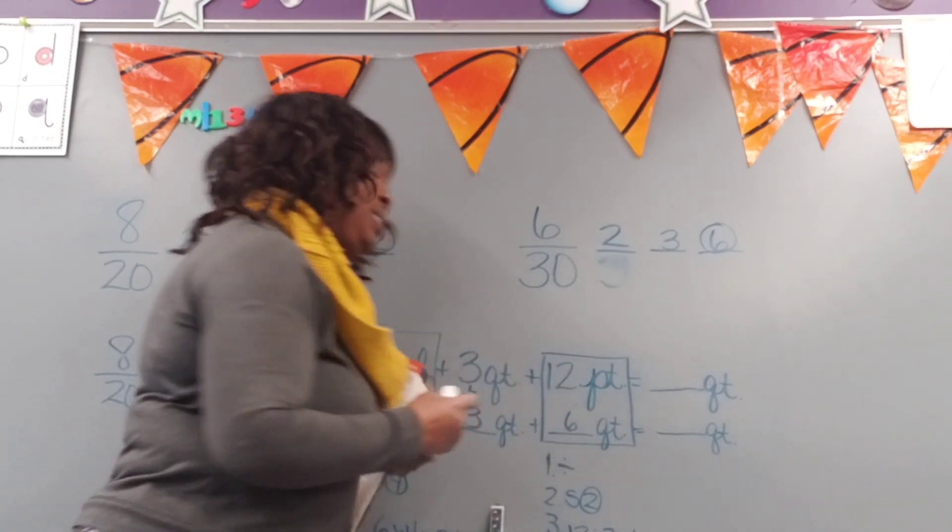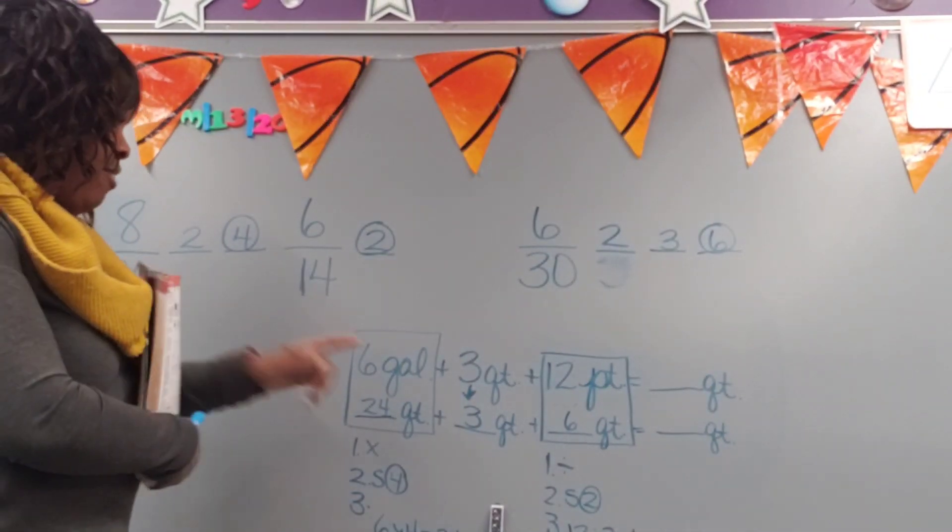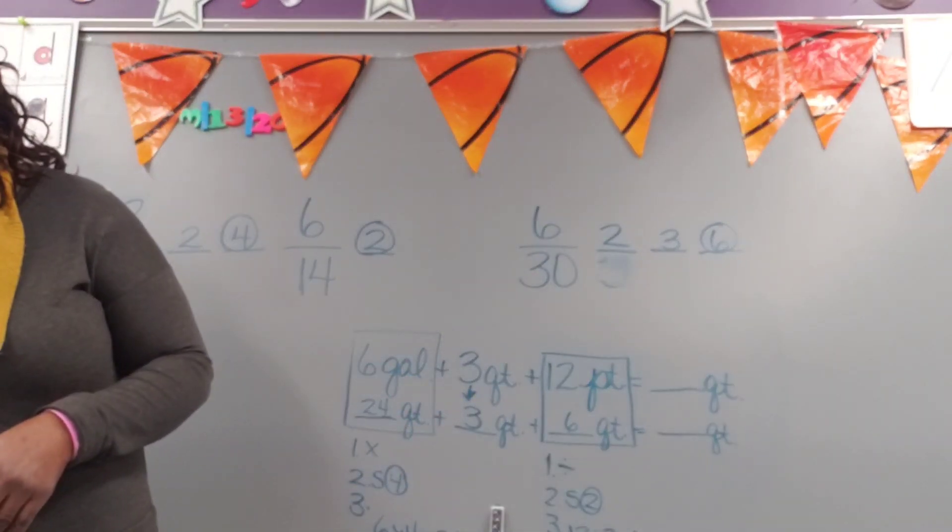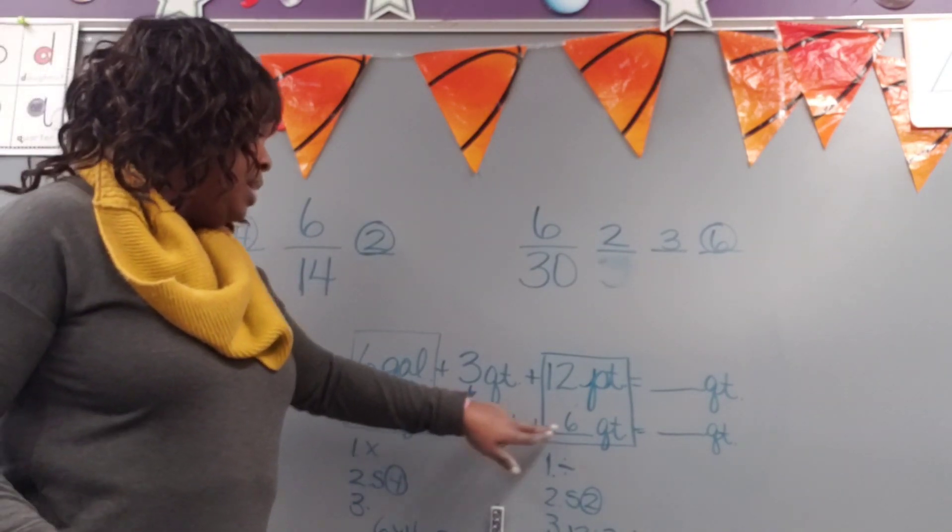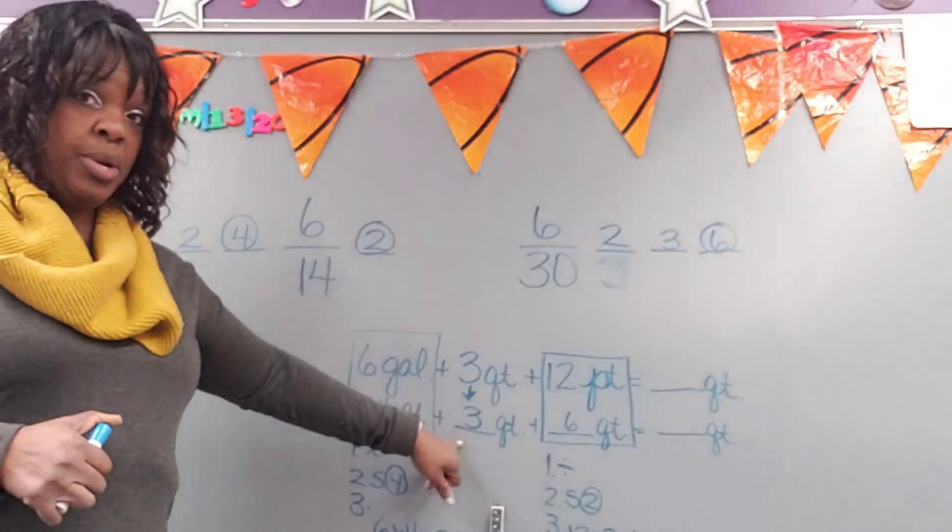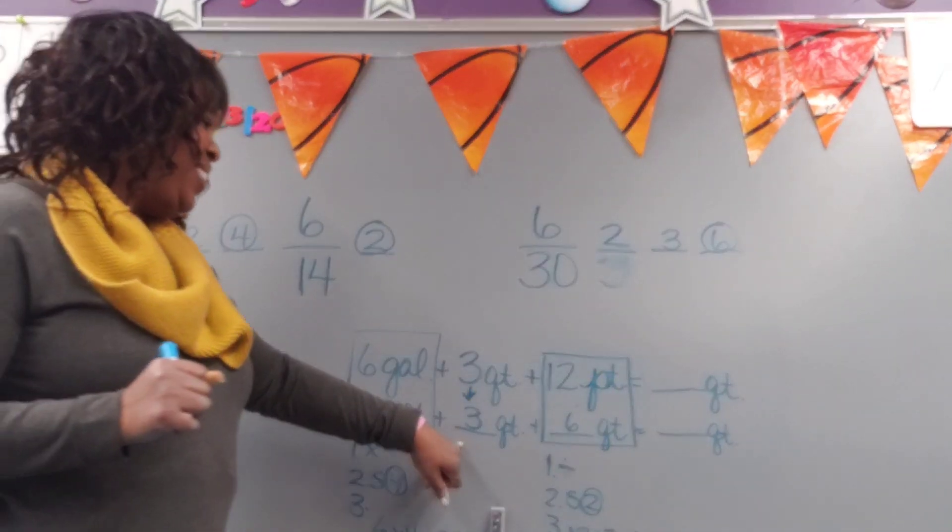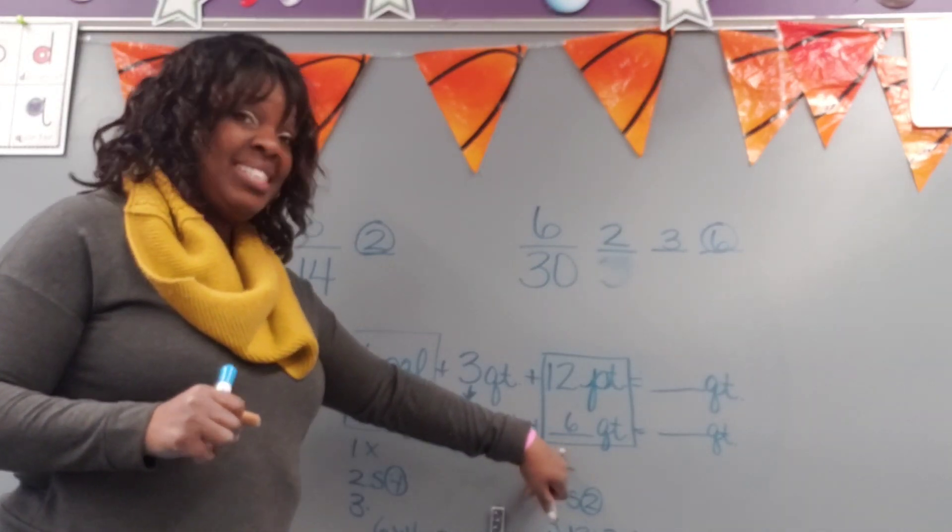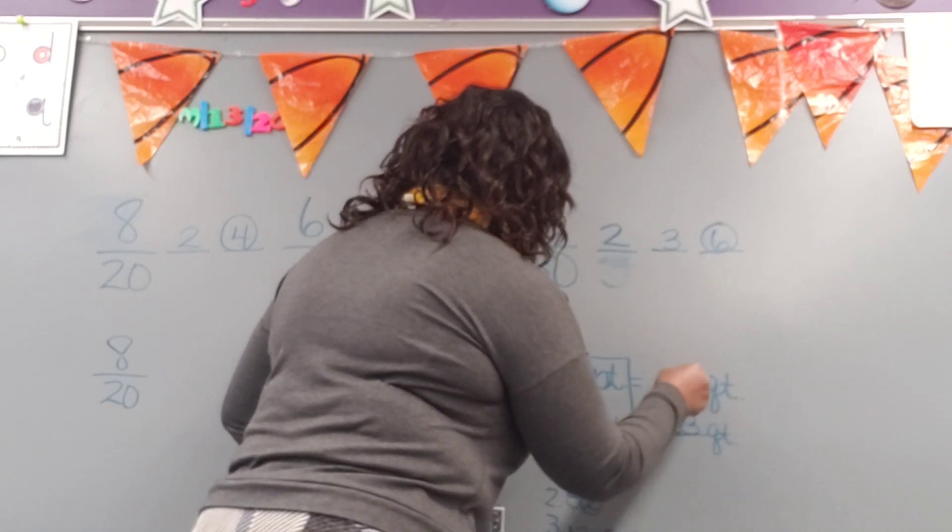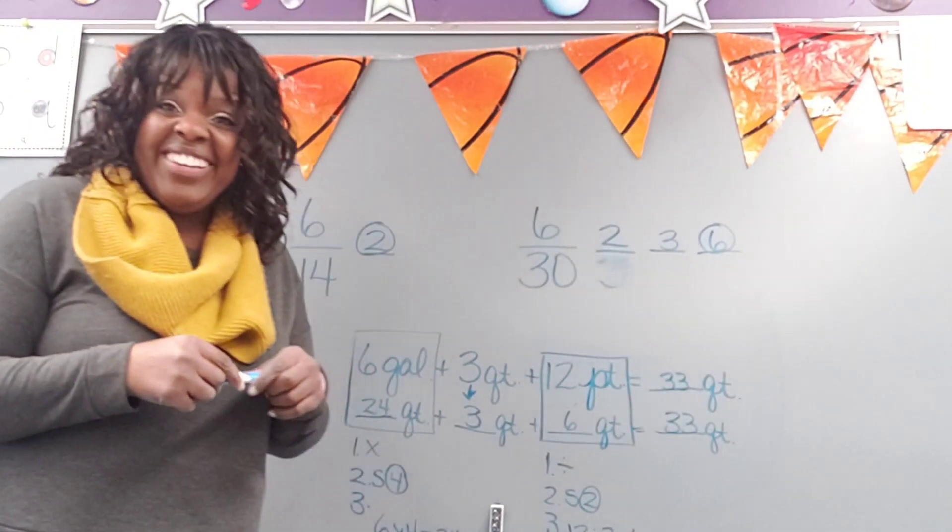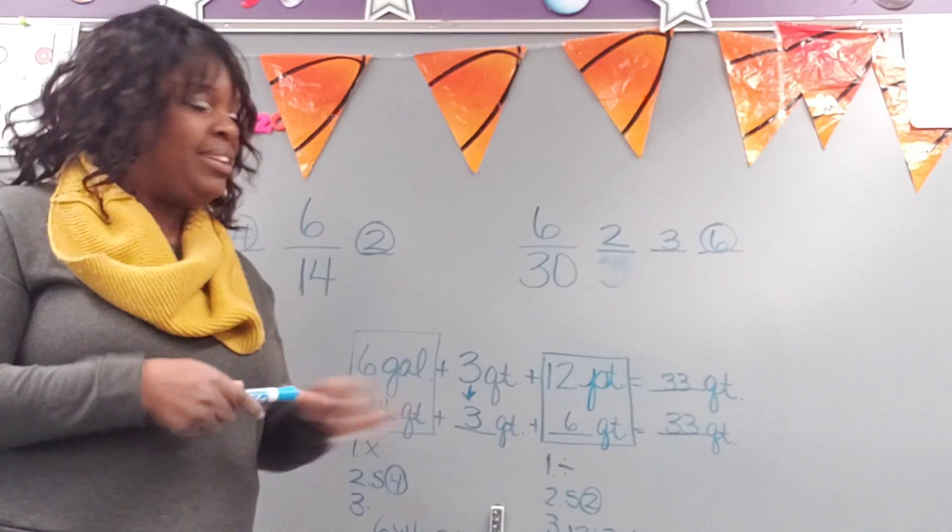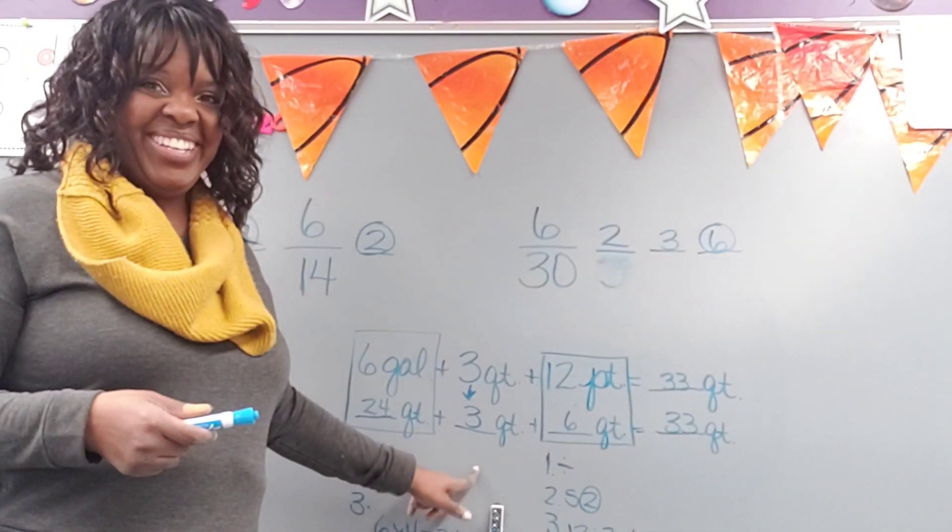Now I have my problem to work out. Twenty-four quarts plus three quarts plus six quarts equals how many quarts? Twenty-four plus three. Twenty-seven. Very good. Twenty-seven plus six. Thirty-three quarts. We put it here and here. And we're done. So hopefully you've got that and already had that down. But just in case you didn't, make sure that's what you're doing. So good job, guys.